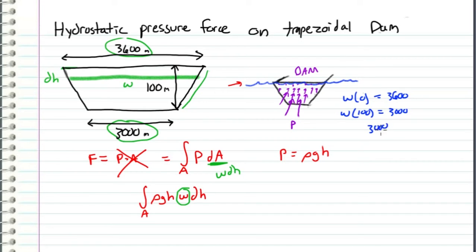minus 3600 over 100 minus 0. This equals negative 6. So we can express the width as a function of depth: w(h) = 3600 - 6h.